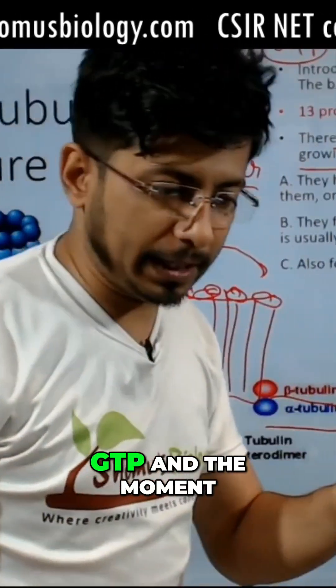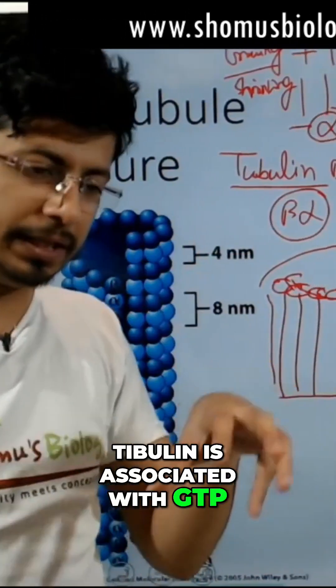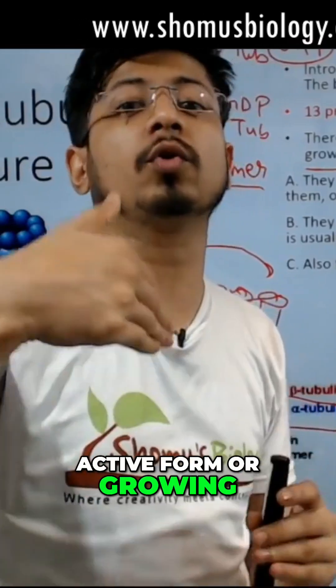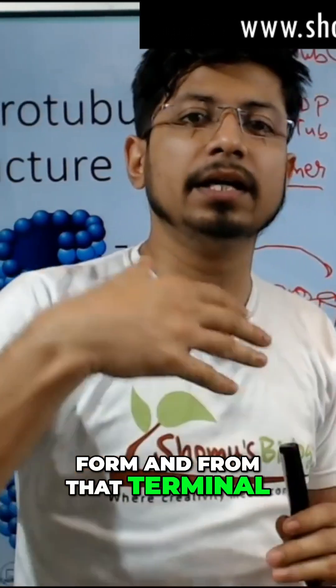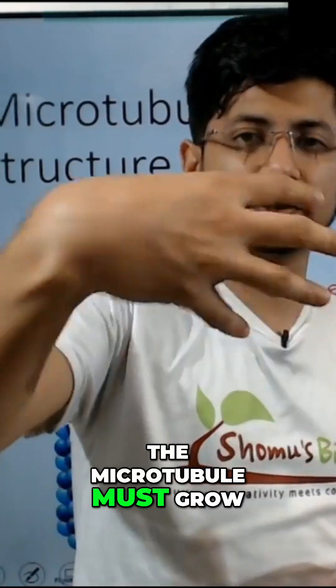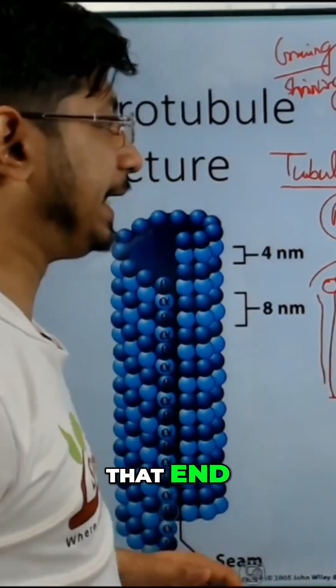Tubulin is associated with GTP, and when tubulin is associated with GTP, it is present in the active or growing form. From that terminal, the microtubule grows from that end.